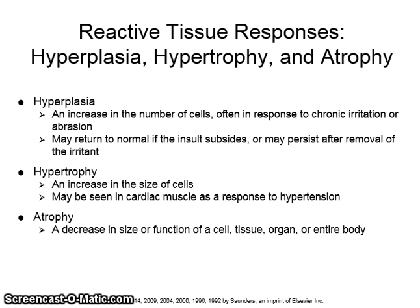The cells in a tissue or organ may react to injury by undergoing an adaptive response such as hyperplasia, hypertrophy, or atrophy. Hypertrophy is an increase in the number of cells, often in response to chronic irritation or abrasion. The tissue may return to normal if the insult subsides or may persist after removal of the irritant. Hypertrophy is an increase in the size of the individual cells, and this may be seen in cardiac muscle as a response to hypertension.